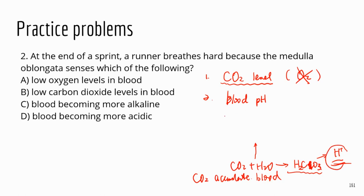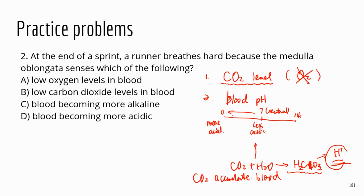On the pH scale from 0 to 14, seven is neutral. Going lower is the acidic range — the smaller the number, the more acidic the solution. The acid resulting from carbon dioxide accumulation decreases pH, and sensors detecting this decrease in pH signal that blood is getting acidic due to too much CO2. That information is sent to the medulla oblongata, which signals the body to breathe.